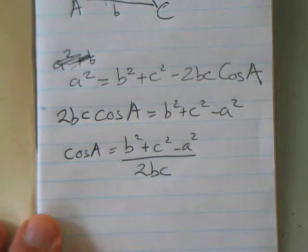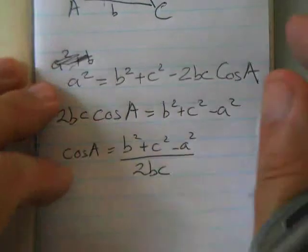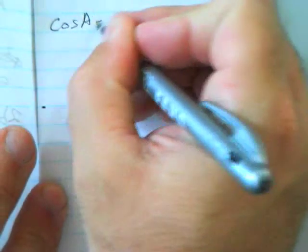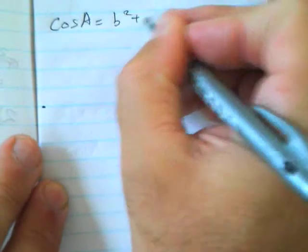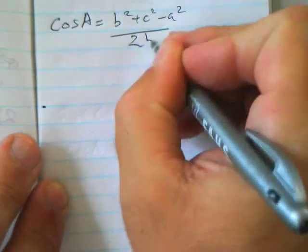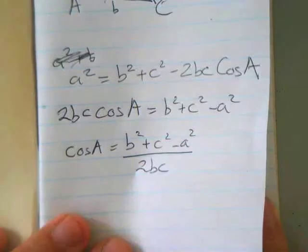Now, at this point, using that particular formula, I'm going to write it down again for you just under here. So, cosine A equals b squared plus c squared minus a squared divided by 2bc. It's exactly the same.